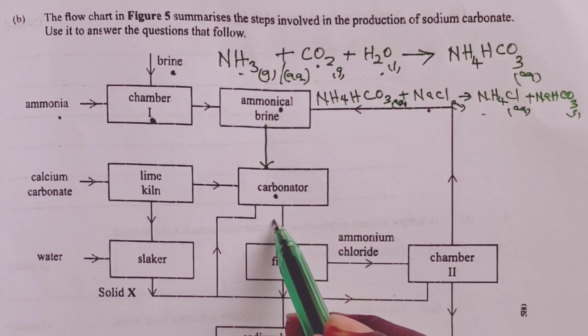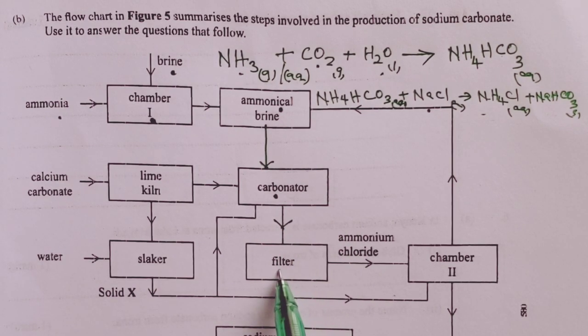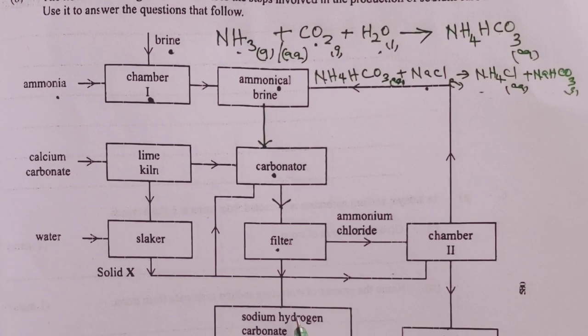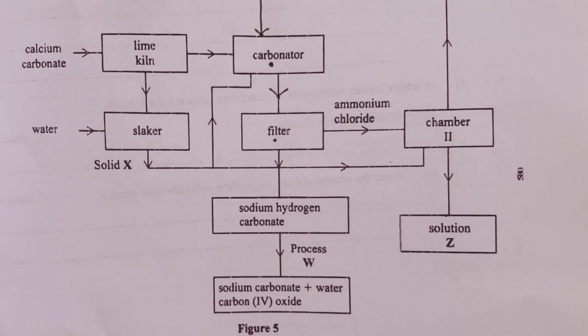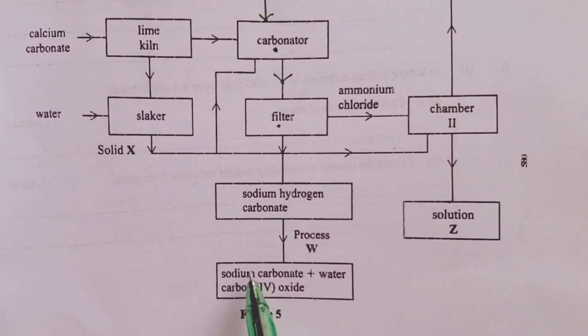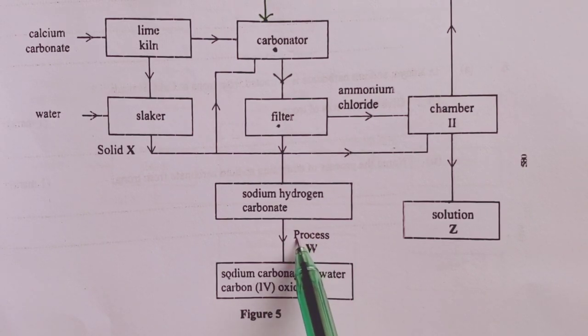Once we obtain them here, we shall direct the two to filters where we separate ammonium chloride to our right, and sodium hydrogen carbonate is directed to the kiln where we heat it to produce our final product of sodium carbonate. So process W is thermal decomposition again. We heat sodium hydrogen carbonate to produce the three substances.